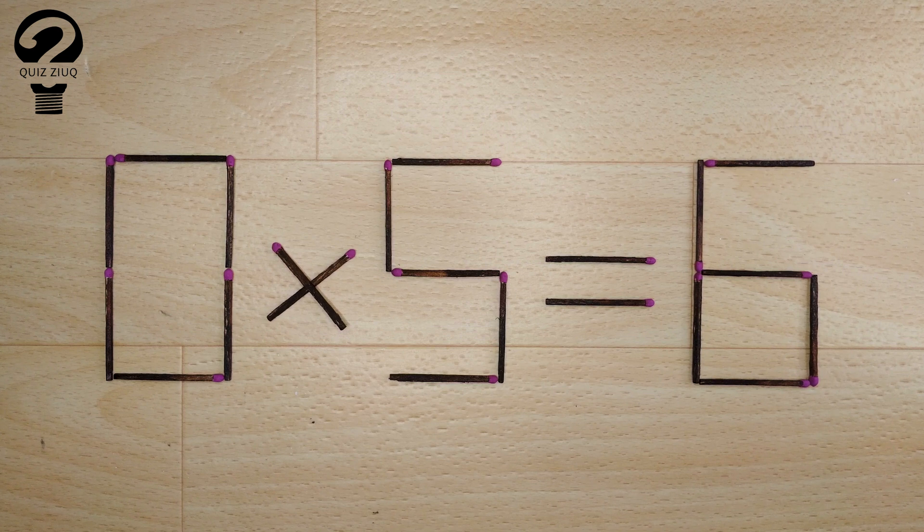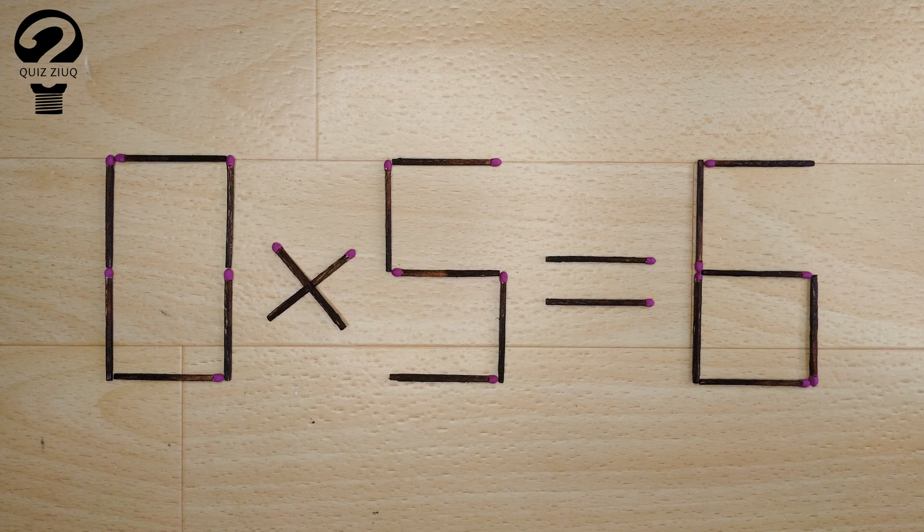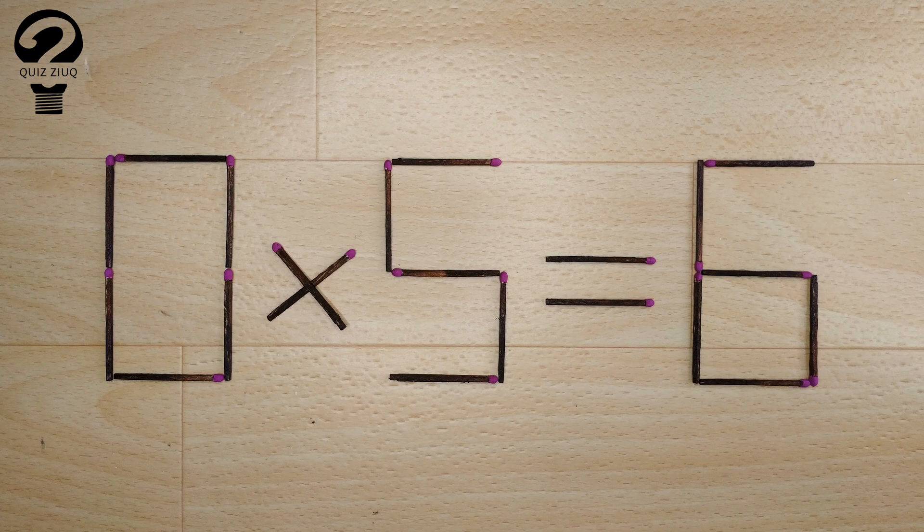Here's the next puzzle. We have this equation. 0 times 5 equals 6. Our equation is incorrect and we need to move one match to make our equation correct.